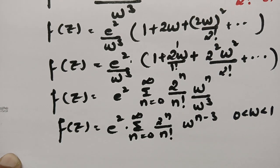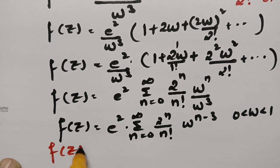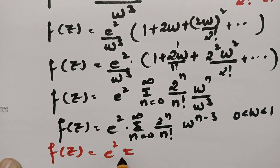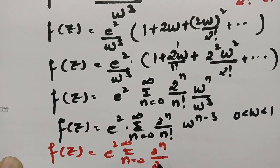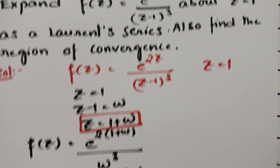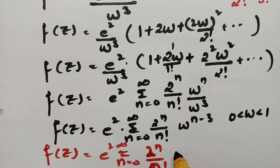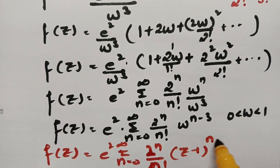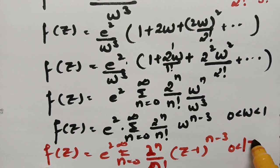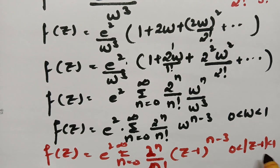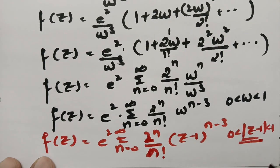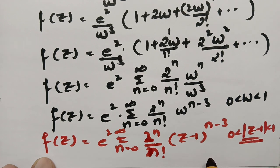We now express the expansion back in terms of z. Since w = z - 1, the final result is: f(z) = e² · Σ (n=0 to ∞) [2^n / n!] · (z-1)^(n-3), with the region of convergence 0 < |z - 1| < 1.